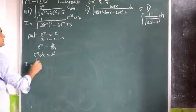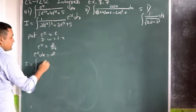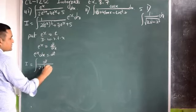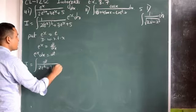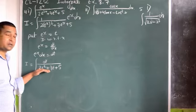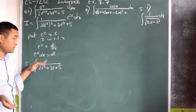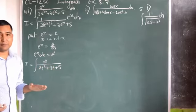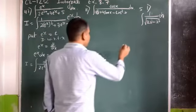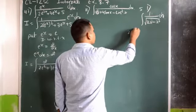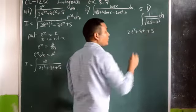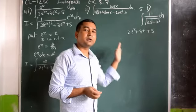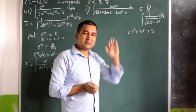Now, changing the variable to t: e^x dx means dt, divided by 2, e^x means t, so we get dt divided by 2(t^2 + 3t + 5). Now this is a purely quadratic expression — there is no variable at the numerator. If there is no variable at the numerator and there is a quadratic equation in the denominator, you need to convert this into completing the square form.